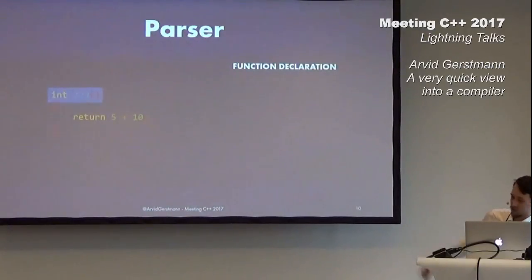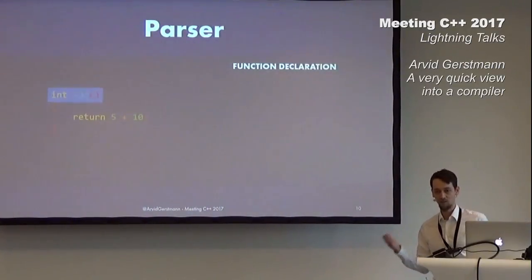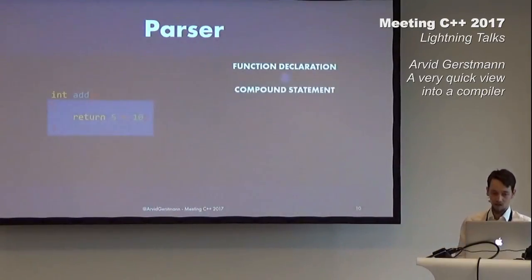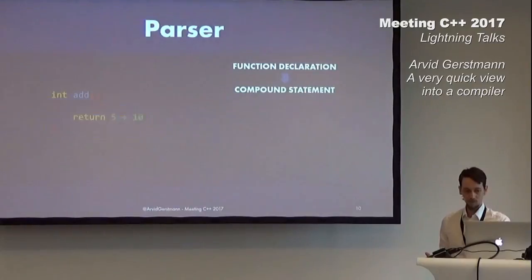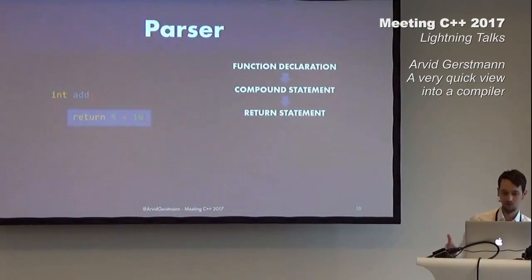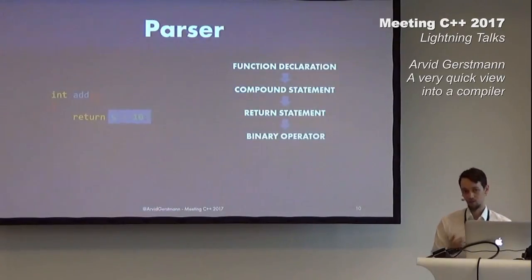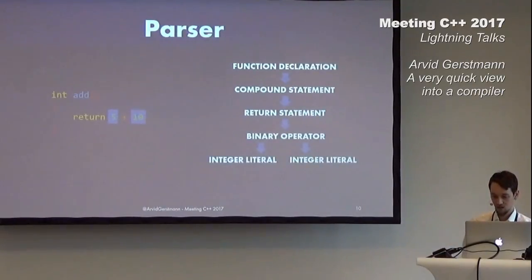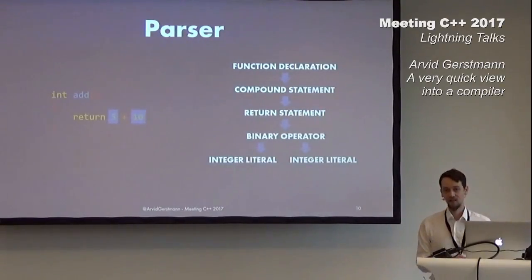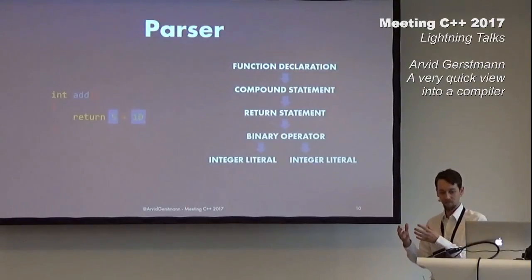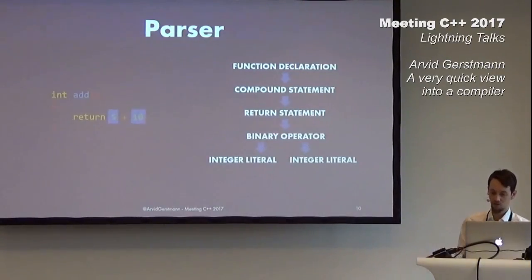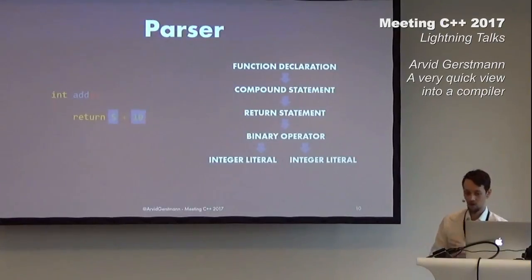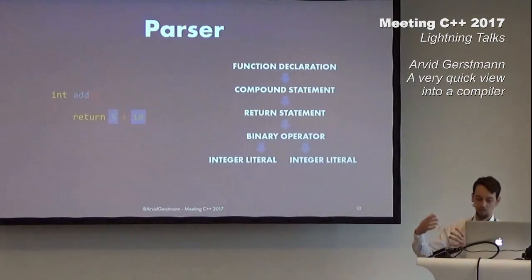At the top we have our function declaration, int as the return type and add as the identifier. Next we have the compound statement, which is the body of our function, containing just one single statement: a return statement. The return statement itself consists of a binary operation adding two integers together — our two integer literals, five and ten. As you can see, the compiler has now built a very new representation of the source code, operating not on tokens or source text anymore, but on a way more abstract level.